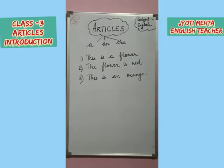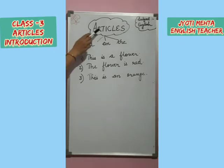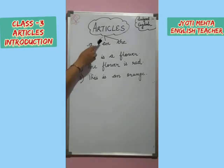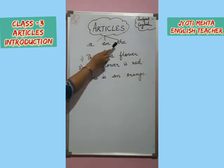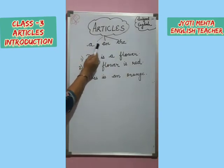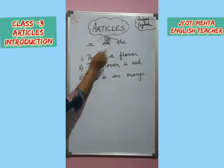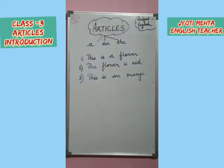So now children, as I have told you, we are going to learn about articles and there are three articles: a, an, the. So let's take some examples.